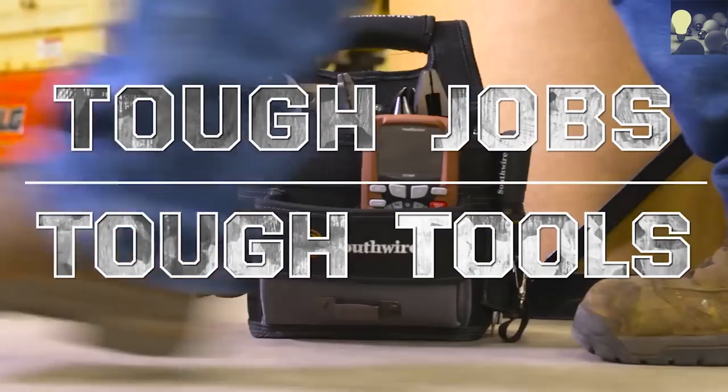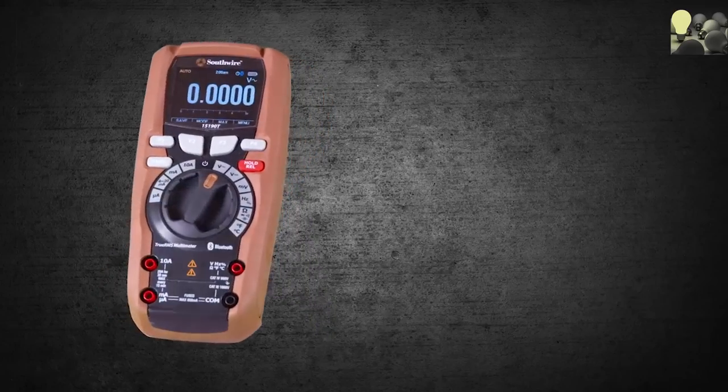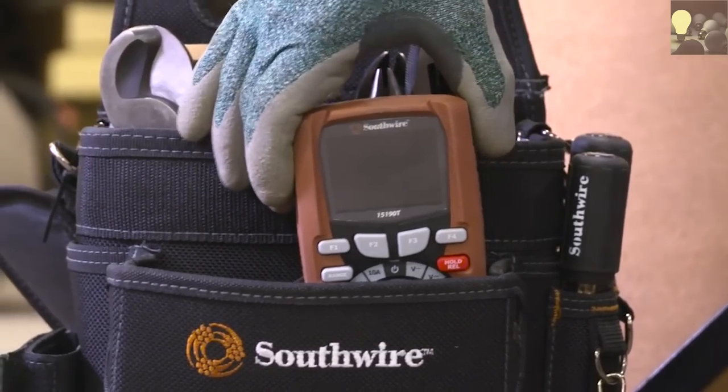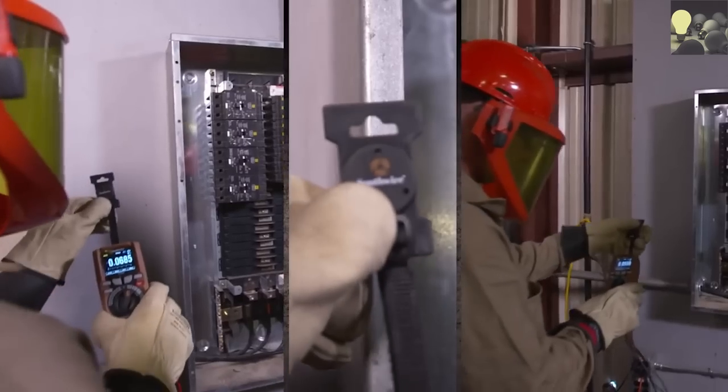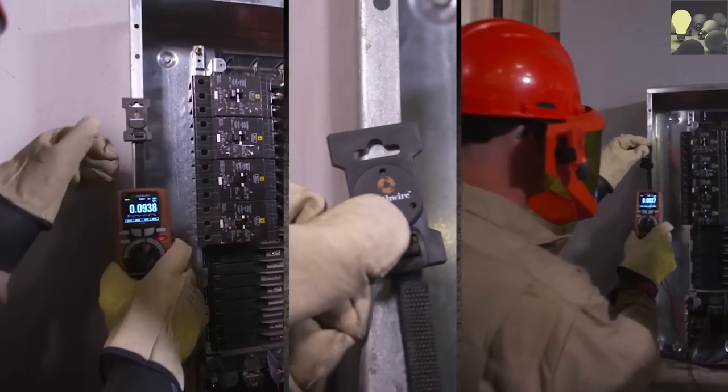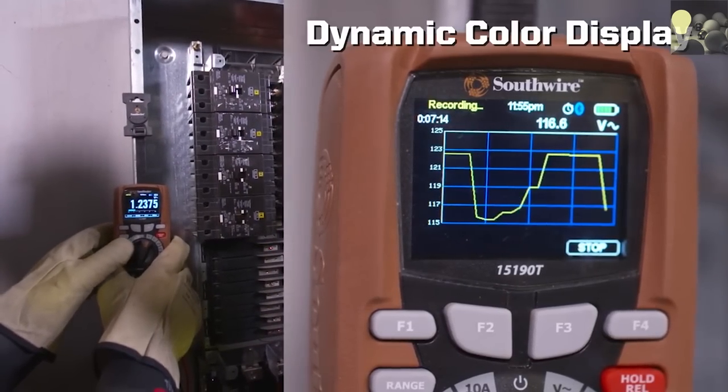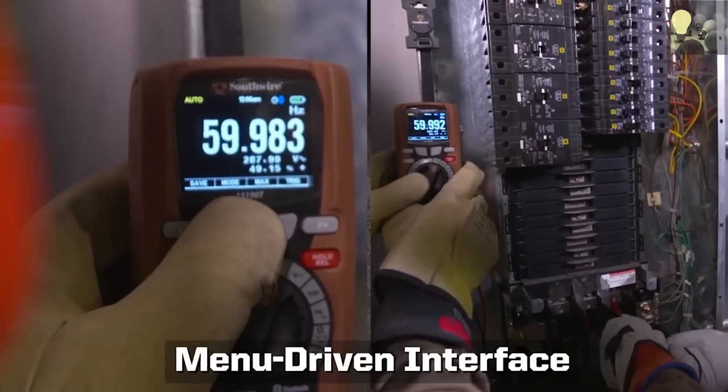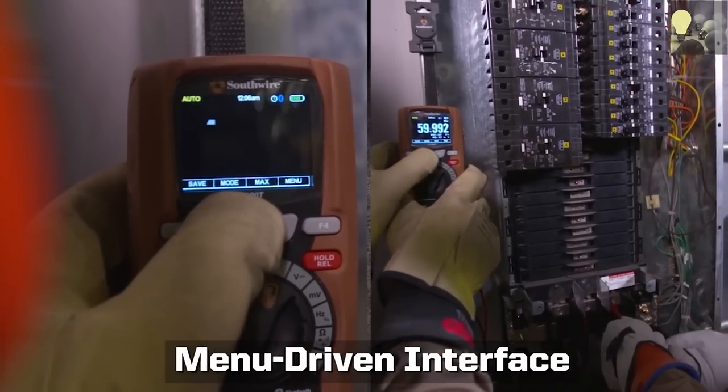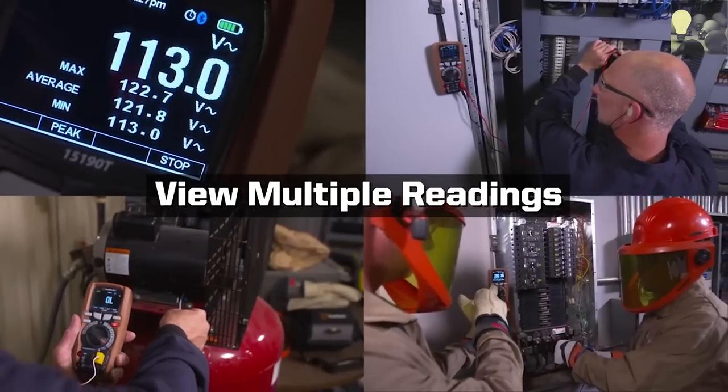Tough jobs demand tough tools. The Southwire 15190T Maintenance Pro Multimeter provides a faster and better way to troubleshoot and maintain critical equipment. A dynamic color display provides an intuitive menu-driven interface that allows you to quickly change meter settings.